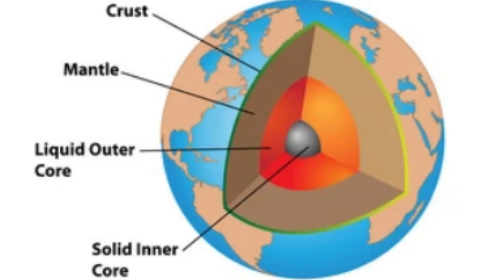The Phanerozoic Eon (541 million years ago to present) is marked by the proliferation of complex life forms and the formation of modern continents through plate tectonics, including the breakup and reassembly of supercontinents. This period also witnessed significant episodes of mountain building, volcanic activity, and sedimentation, shaping the Earth's crust into its current configuration. Throughout its evolution, the Earth's crust has been continually modified by erosion, weathering, sedimentation, volcanic activity, and tectonic movement.